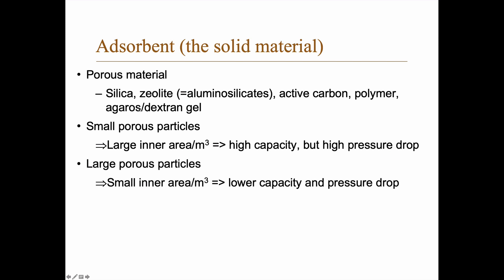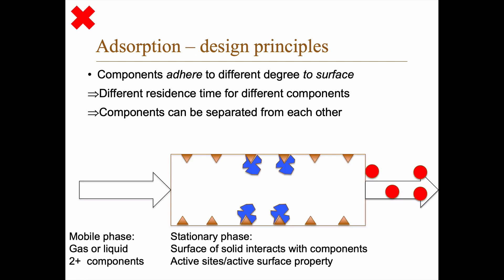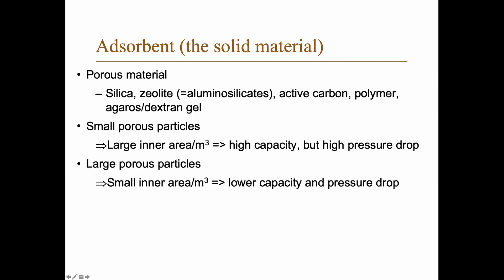How do you choose? You choose a material that has the right kind of activity for the separation you want. You need to pack it into a column somehow. You could use small porous particles — the benefit is that you get a large inner area per cubic meter of particles, and thus a high adsorption capacity. But you also get a high pressure drop. Imagine trying to push something through a cylinder packed with sand versus gravel — it's much easier with gravel.